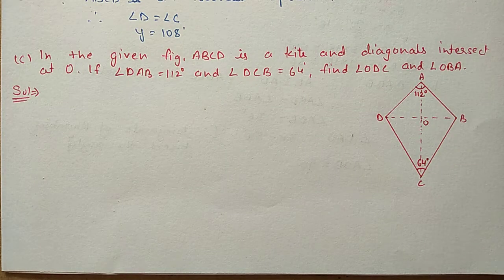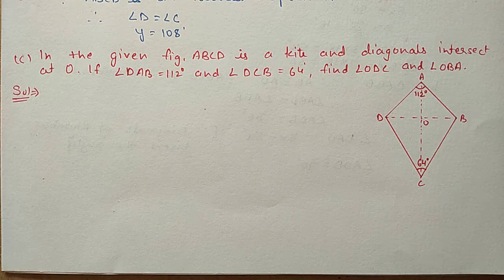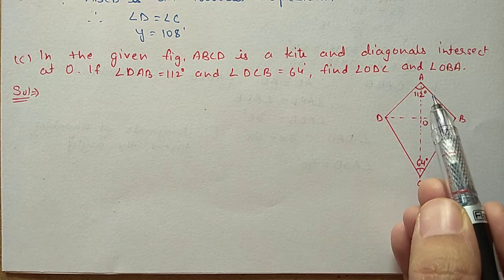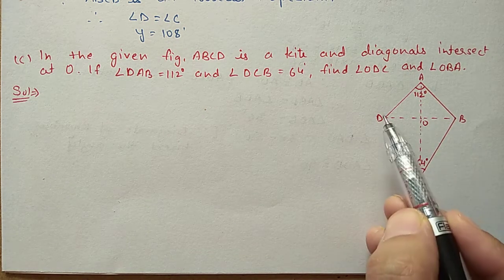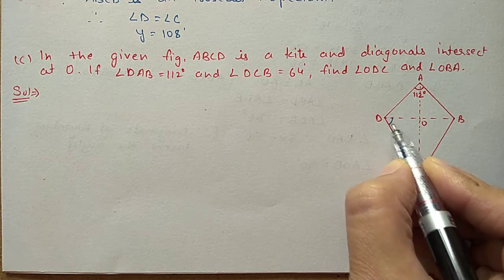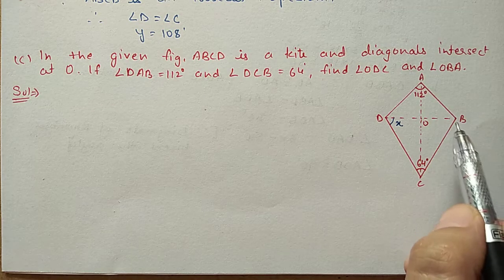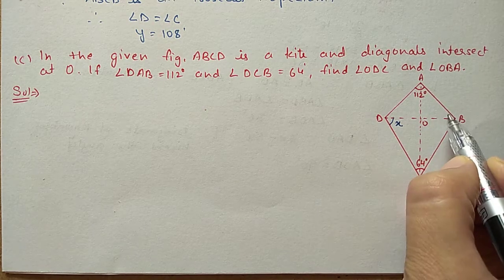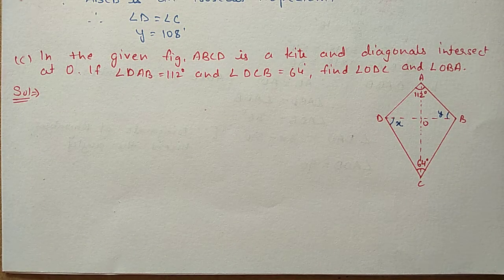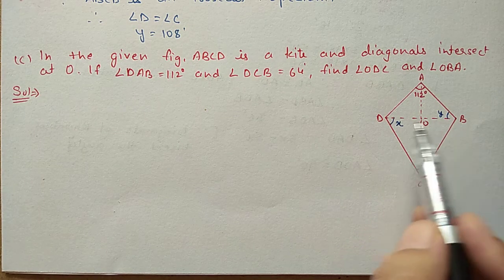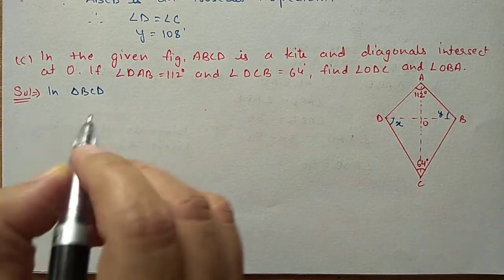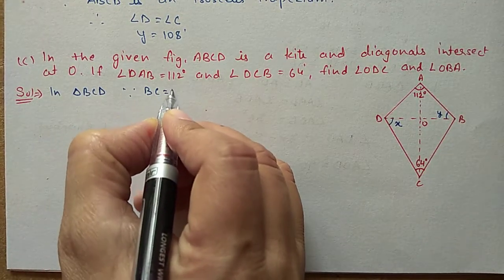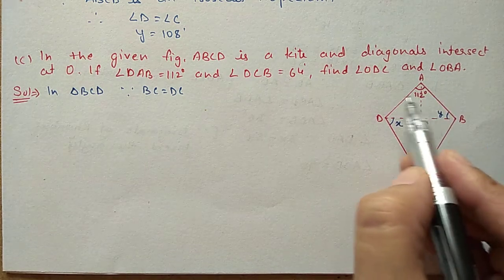Next, part C of question 8. In the given figure ABCD is a kite and the diagonals intersect at O. If angle DAB is equal to 112 degrees and angle DCB is equal to 64 degrees, find angle ODC and angle OBA. Let angle ODC be X and angle OBA be Y. First we will take triangle BCD. In triangle BCD, BC is equal to DC, so these two sides are equal.